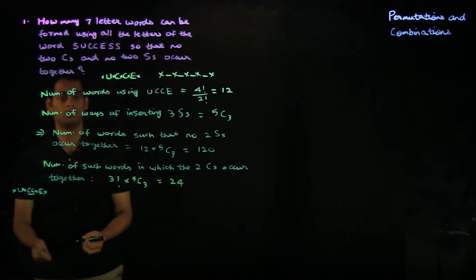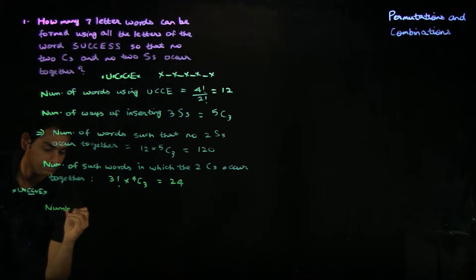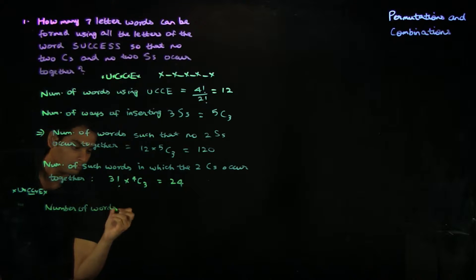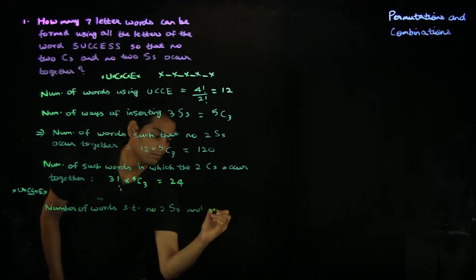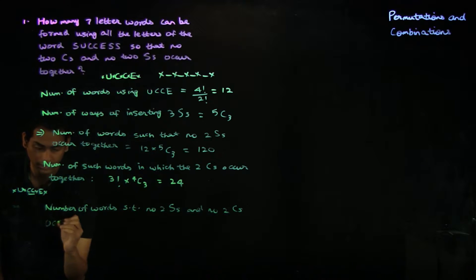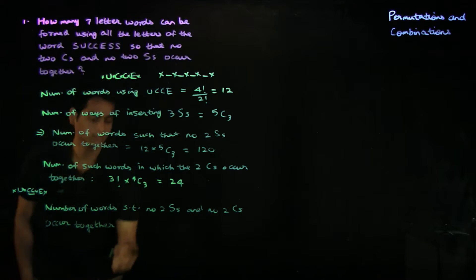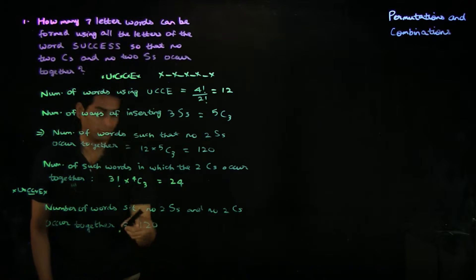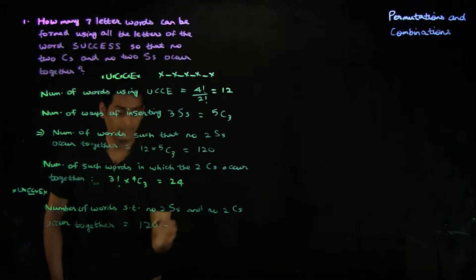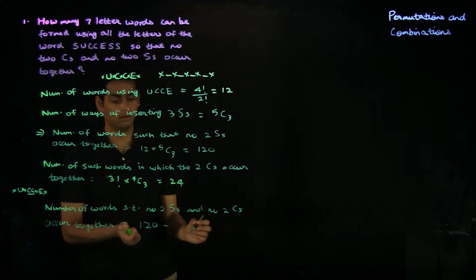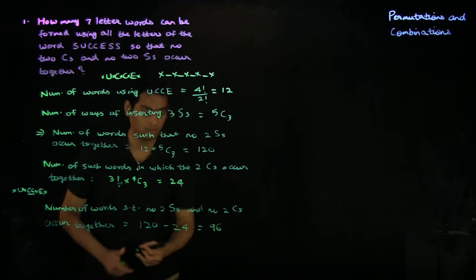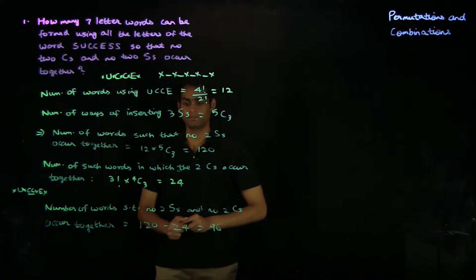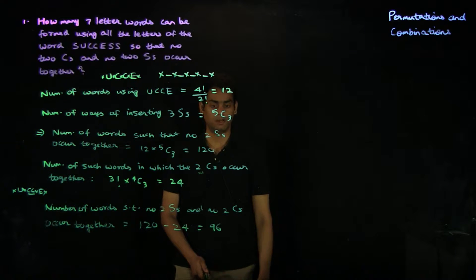The number of words such that no two S's and no two C's occur together is the total number of words in which no two S's occur together — which is 120 — minus the number of such words in which the two C's also occur together — which is 24. This turns out to be 96. So we have 96 words in which no two S's and no two C's occur together.